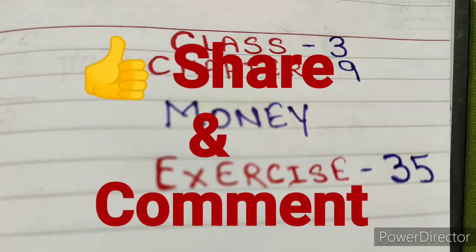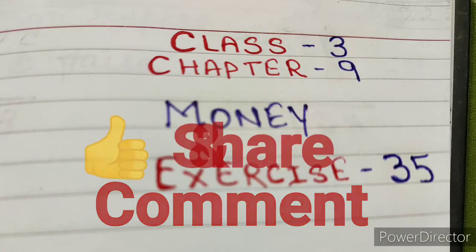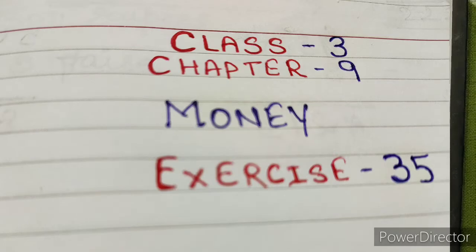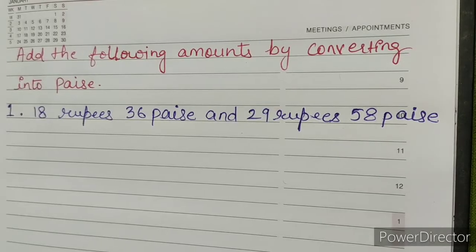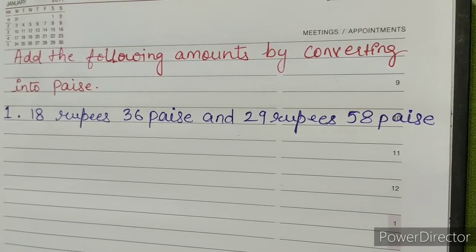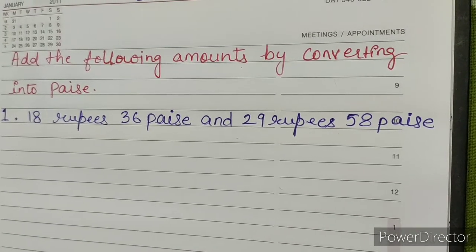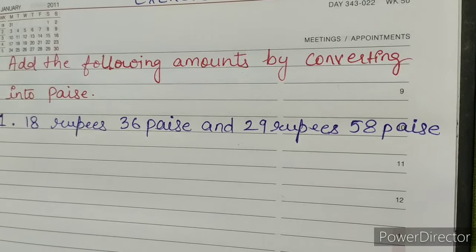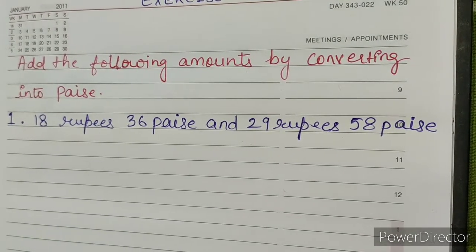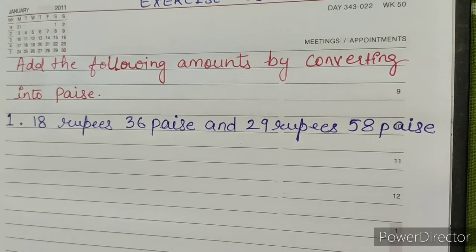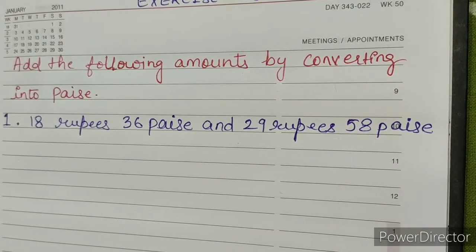Hello students, welcome back to our new video session. This video is for class 3, chapter 9, money exercise 35. Add the following amount by converting into paise. Question number one: 18 rupees 36 paise and 29 rupees 58 paise.